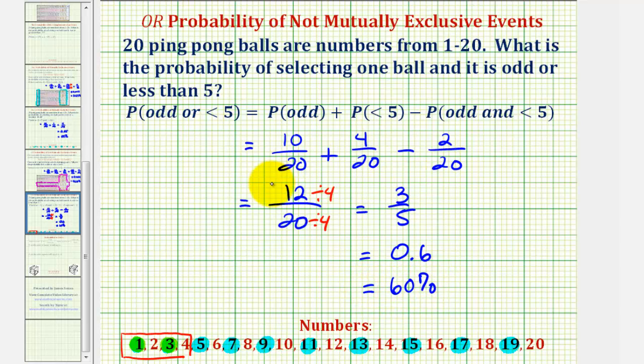And notice how if we just stop and focus on 12/20 for a moment, if we were to clear our work below and identify the numbers that are odd or less than 5, if we're starting at 1, one is odd, two is less than 5, three is odd, four is less than 5, five is odd, six is not odd and it's also not less than 5.